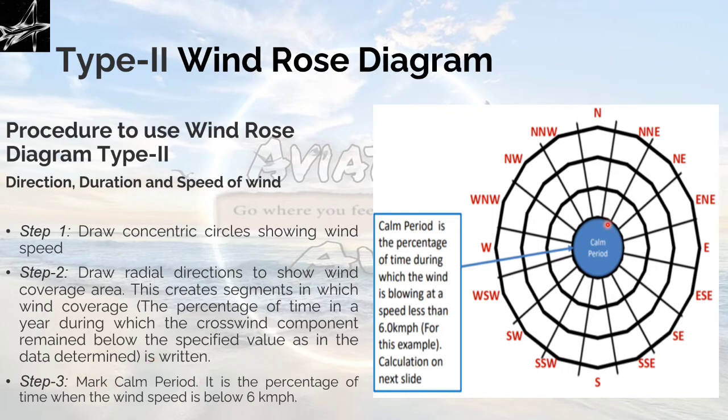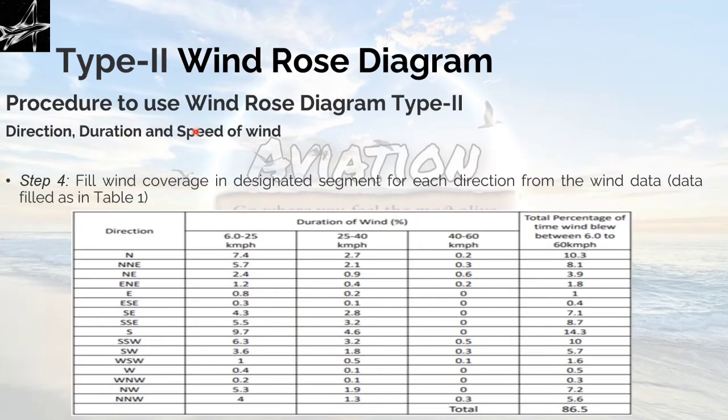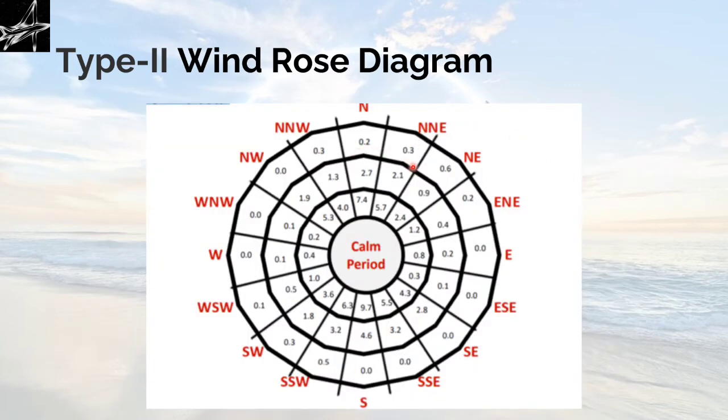Step 3: Mark the calm period. As I have already told in the previous slides, the calm period is the center part where the speed of the wind is less than 6 km per hour. Step 4: fill the wind coverage in the designated segment for each direction from the wind data. This is the table which we have taken from the previous slide. I have already explained this table. You have to put this data of the wind speed into the segments which are created in the diagram.